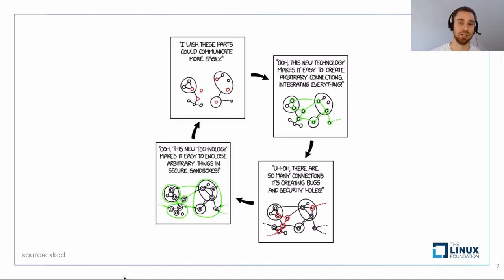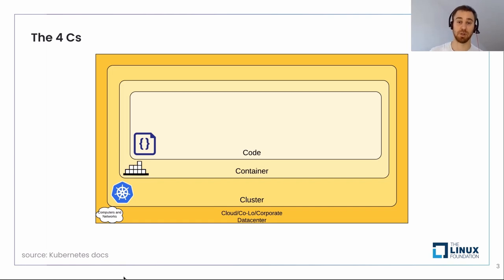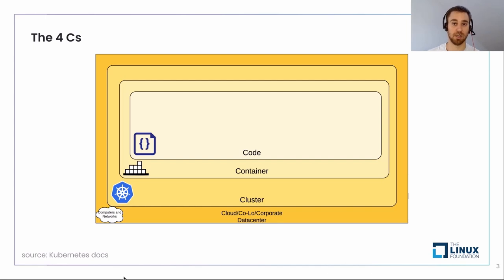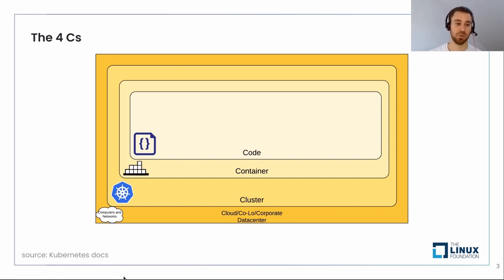Let's move into security in the cluster. How do we secure a cluster? We can start by thinking about the four C's of cloud native security. The first C is the cloud or data center — the compute, networking, and hardware behind everything. The second C is the Kubernetes cluster, where we deploy our workloads: deployments, replica sets, jobs, daemon sets, pods. Those workloads run containers, which is the third C — a bit of sandboxing that traps our logic. That logic comes from the fourth C, the code. For this talk, we'll focus on the cluster and container part.